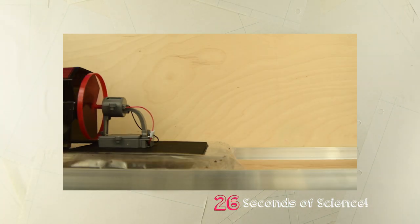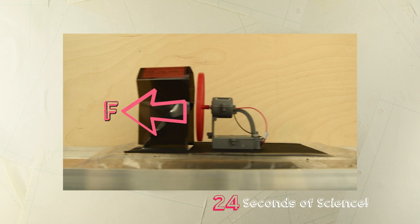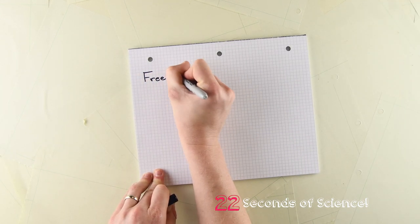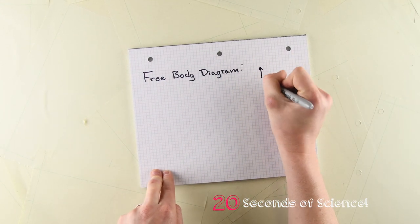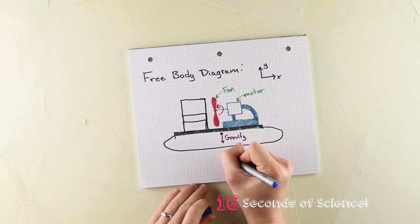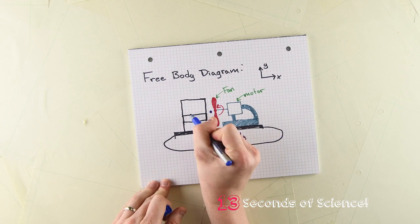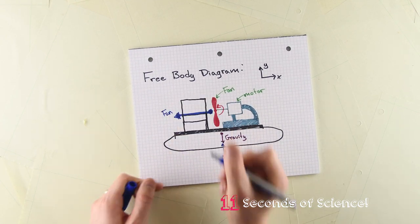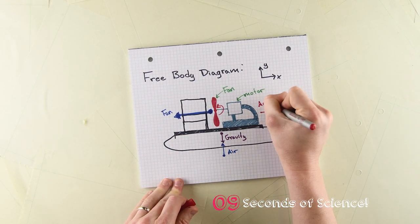Let's look at our hovercraft again. The fan on this hovercraft will apply a force on the hovercraft pushing it forward. Using a free body diagram, we can show how this force acts. In the vertical direction, the force of gravity is still balanced by the force of the air cushion under the hovercraft. But in the horizontal direction, the force of the fan pushes the hovercraft forward.